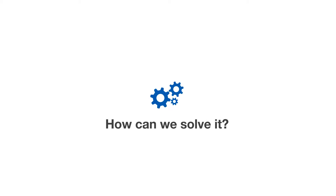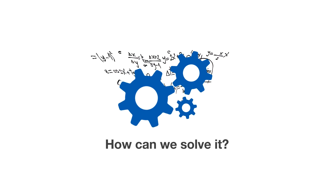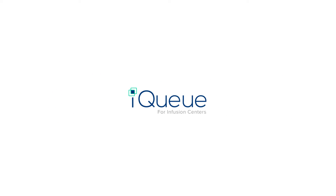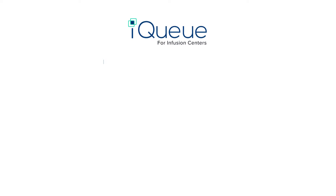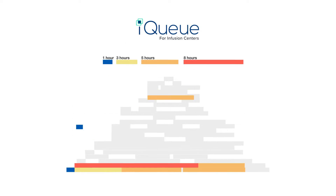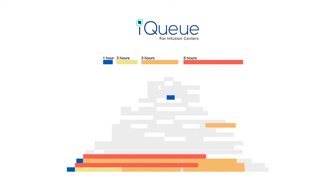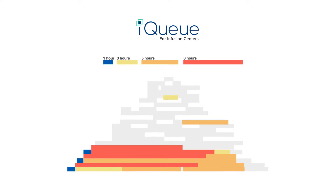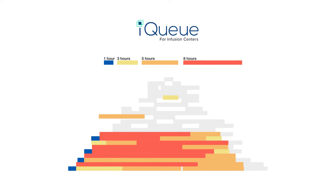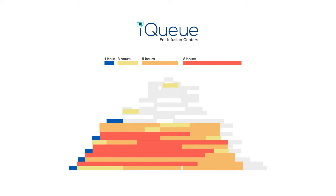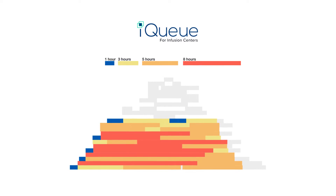How can we solve it? Using data science and machine learning — that's where IQ for infusion centers comes in. IQ looks at your daily appointment patterns as well as chair and staff availability, and then uses patented, constraint-based optimization algorithms to come up with appointment slots that fill gaps and level-load the daily schedule.